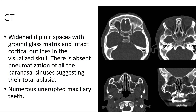On CT, we can appreciate widened diploic spaces with ground glass matrix and intact cortical outlines in the visualized skull. There is absent pneumatization of all the paranasal sinuses, including the frontal, the ethmoid, the sphenoid, and the maxillary, suggesting their total aplasia. There are also numerous unerupted maxillary teeth.